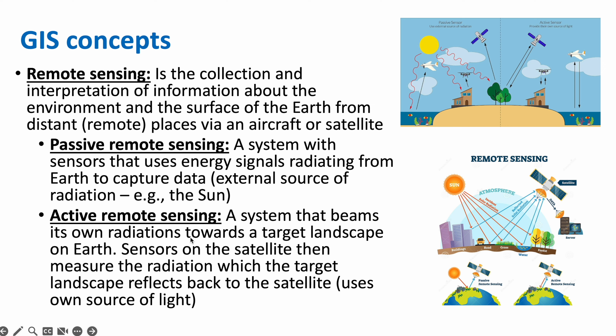We have two subtypes of remote sensing. The first is passive remote sensing, which is a system with sensors that uses energy signals radiating from Earth to capture data — basically using an external source of radiation, for example the Sun. In active remote sensing, the system beams its own radiations towards a target landscape on Earth. Sensors on the satellite then measure the radiation which the target landscape reflects back to the satellite. So in active remote sensing, the system uses its own source of light.